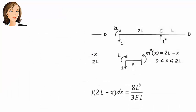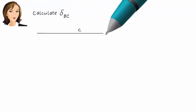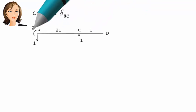Next, we determine delta BC. This is vertical displacement at B due to a vertical unit load placed at C.